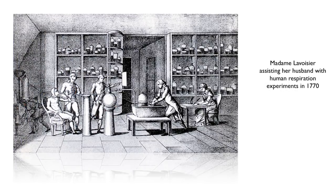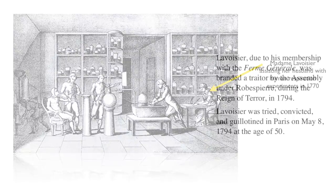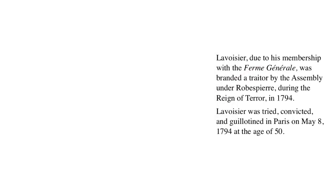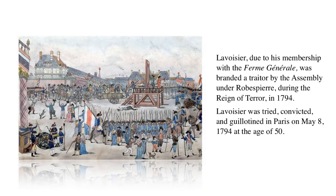She's shown here assisting him as he's looking at cellular respiration and metabolic rate in humans. The story does not end well. Because of the organization that his wife was involved with — the tax collectors — during the revolution, all of them were executed. He was tried, convicted, and sent to the guillotine at the age of 50. It's interesting to think about how much more he could have discovered. By the way, the French government did exonerate him one and a half years later.